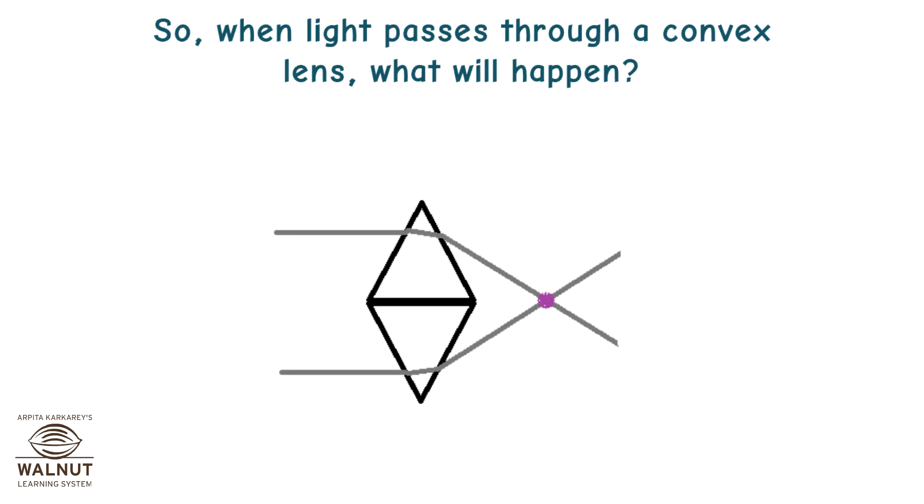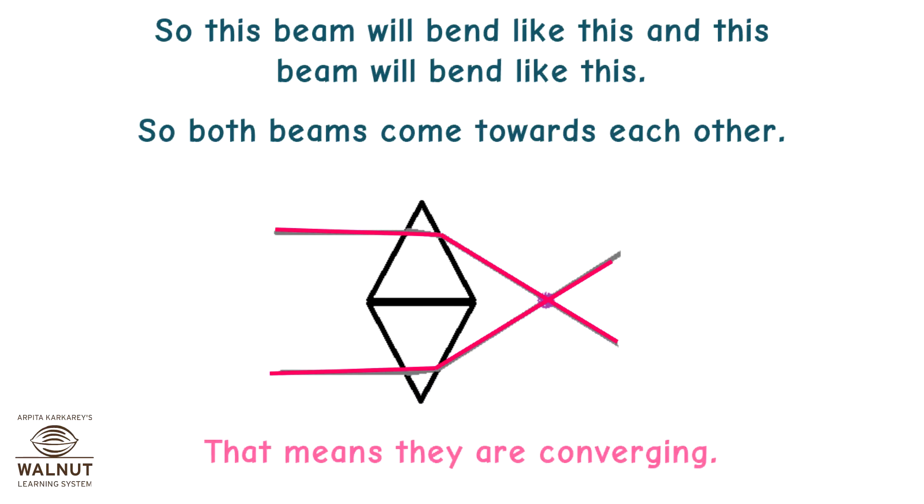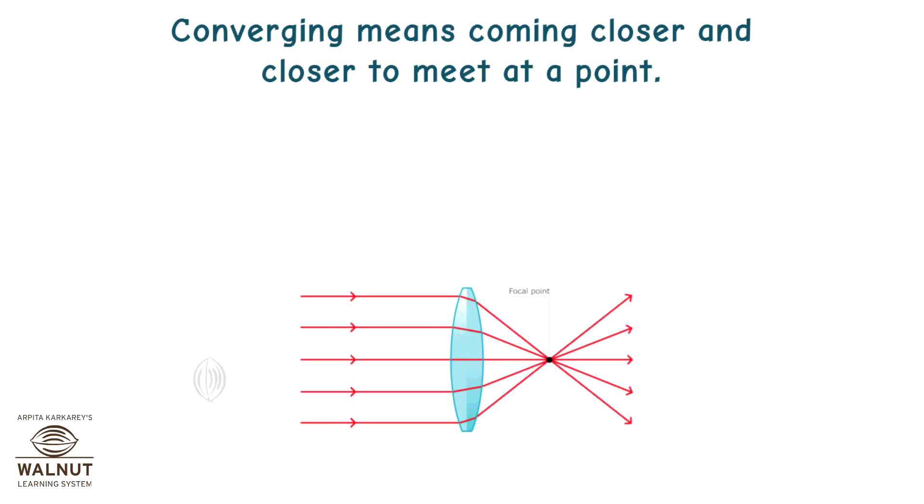So when light passes through a convex lens, what will happen? It will bend towards the base. So this beam will bend like this and this beam will bend like this. So both beams come towards each other. That means they are converging. Converging means coming closer and closer to meet at a point. So a convex lens is called a converging lens.